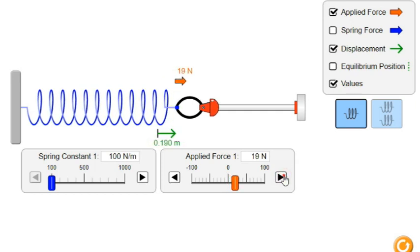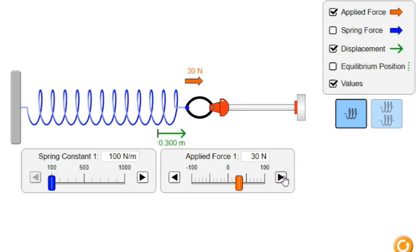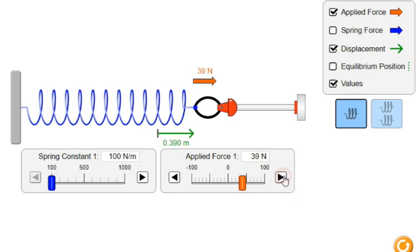If we increase the force to 20 N, the spring will extend by 0.2 meters or 20 centimeters. On 30 N the displacement is 0.3 meter and on 40 N it is 0.4 meter and so on. 100 N force the displacement is 1 meter.